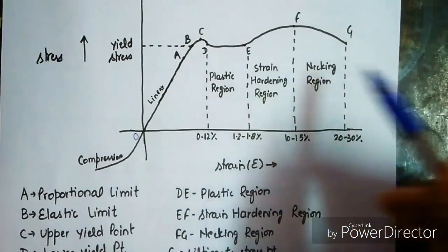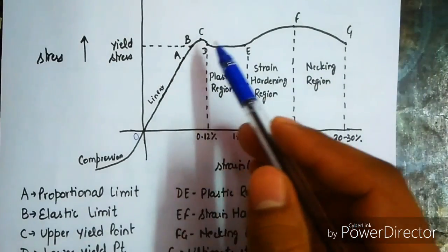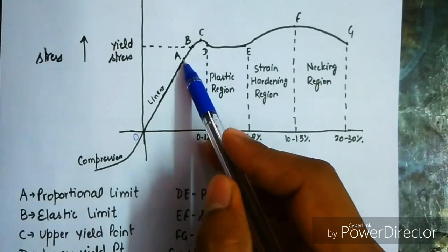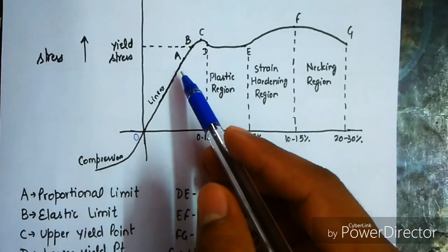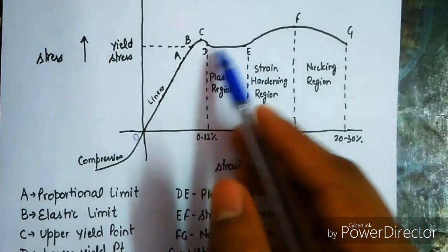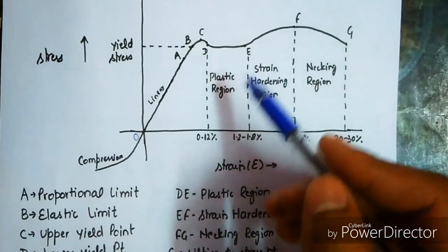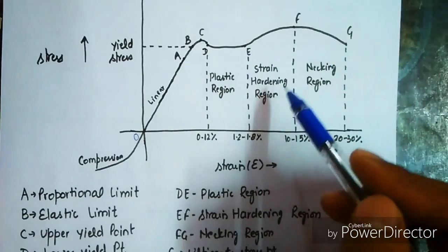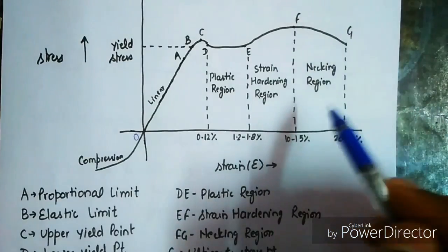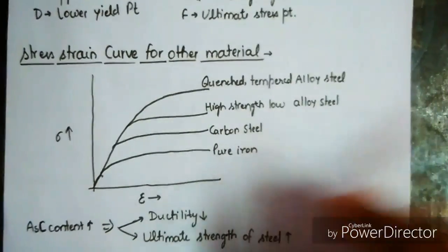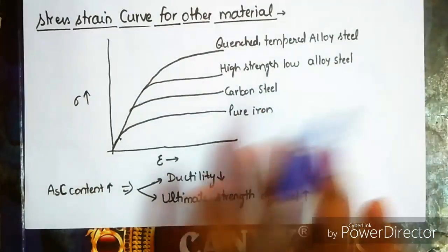Hooke's law is applicable up to the proportional limit. After point D (lower yield point) we have the plastic region up to point E. From E to F is the strain hardening region, and from F to G is the necking region.